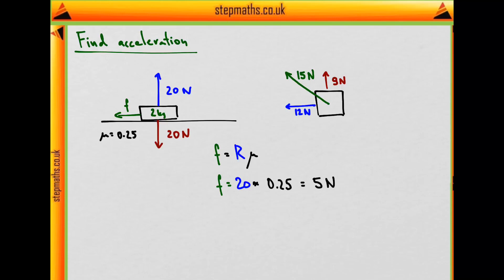This force will always act against a force which causes the motion, and in our case it is this 15 Newtons resultant force. So in the opposite direction has to be this force of friction, 5 Newtons. Again, this diagram is from above.